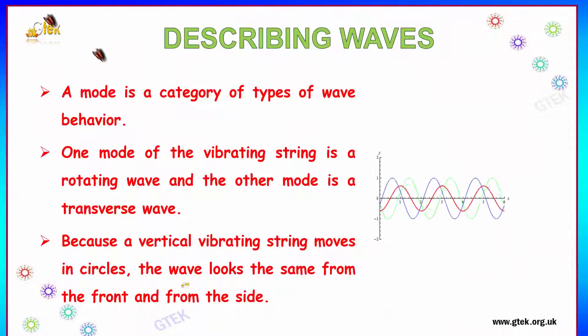Let's talk about describing waves. A mode is a category of types of wave behavior. One mode of the vibrating string is a rotating wave and the other mode is a transverse wave. Because a vertical vibrating string moves in circles, the wave looks the same from the front and from the side.